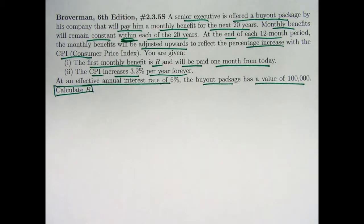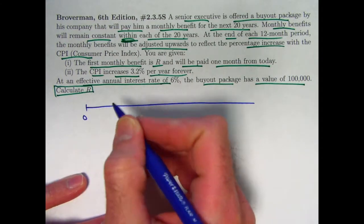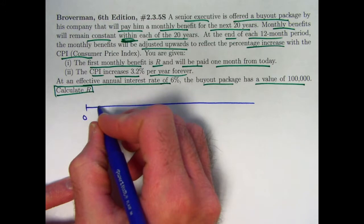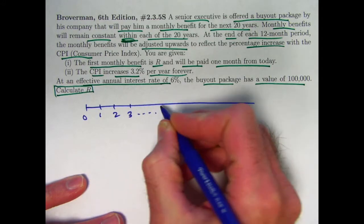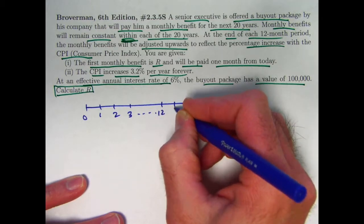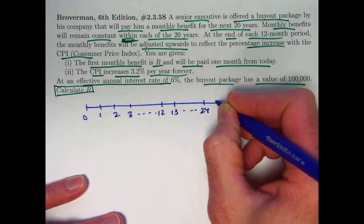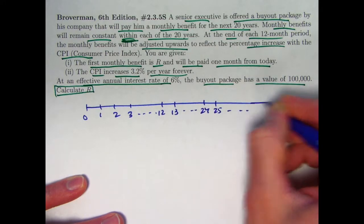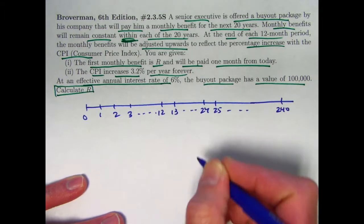The goal is to calculate that monthly benefit during the first year. So yeah, it's kind of a long problem statement. Don't panic. Let's draw a timeline. Should we measure time in months or years? I think maybe initially months, but then after that point we might want to measure it in years. So this is initially in months. This is the first year, the first 12 months, and then the second year is the second group of 12 months, and then the third year, etc. There's 20 years total, so that would be 240 months at the end here.